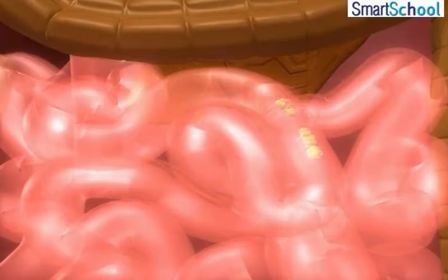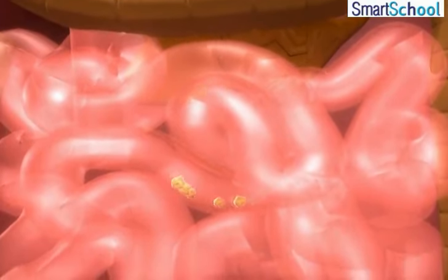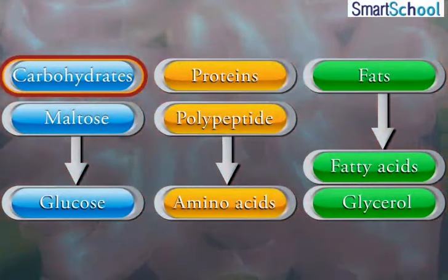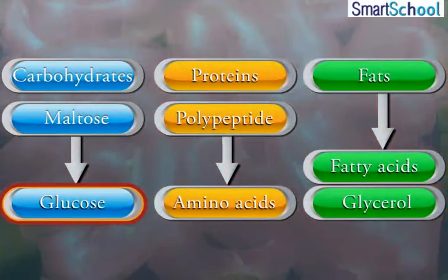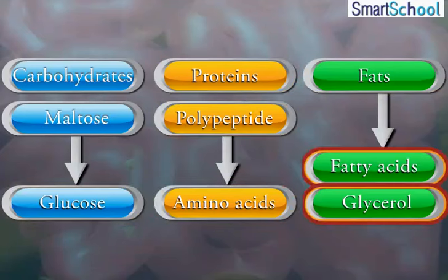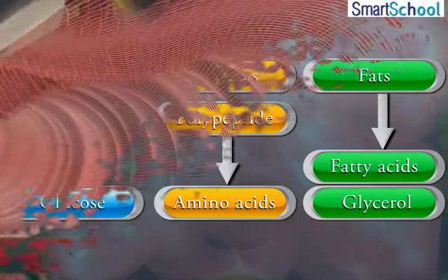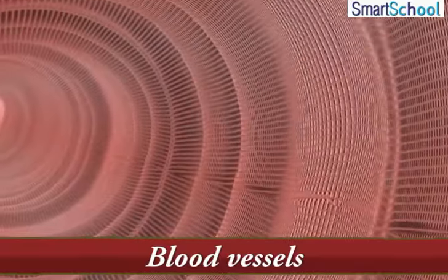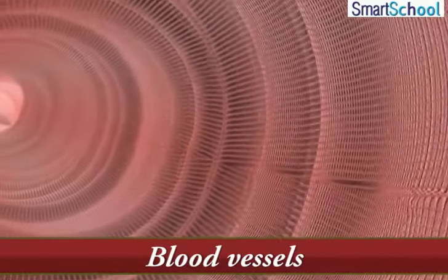In the lower part of the small intestine, the intestinal juice completes the digestion. It converts carbohydrates into simple sugars and glucose, proteins into amino acids, and fats into fatty acids and glycerol. The digested food then passes into the blood vessels in the wall of the small intestine.